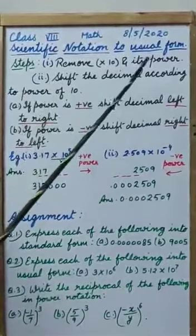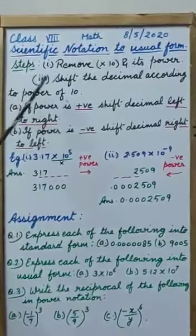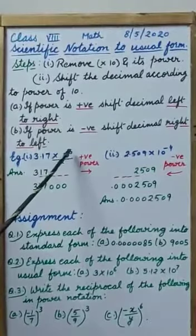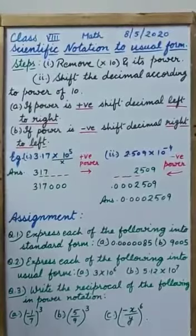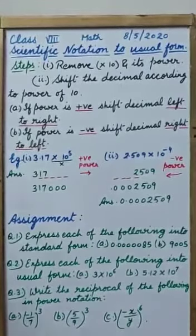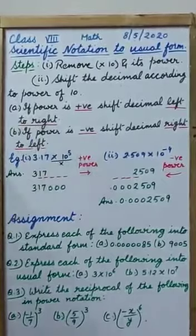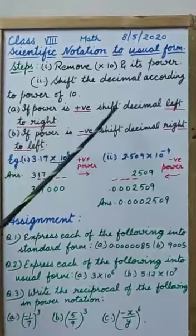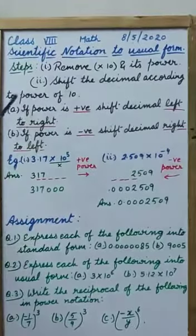Shift the decimal according to power of 10. Power of 10 is plus 5, so according to plus 5 we will shift the decimal. It means 5 places, but in which direction? If power is positive, shift decimal left to right.